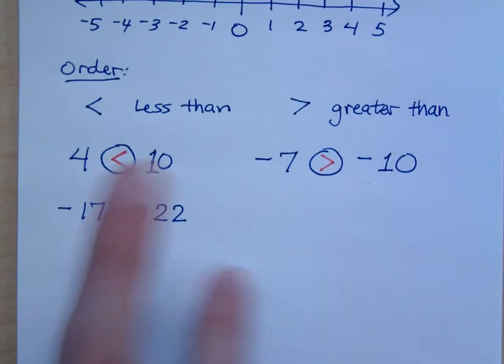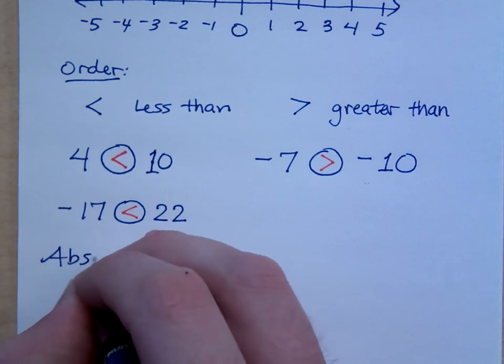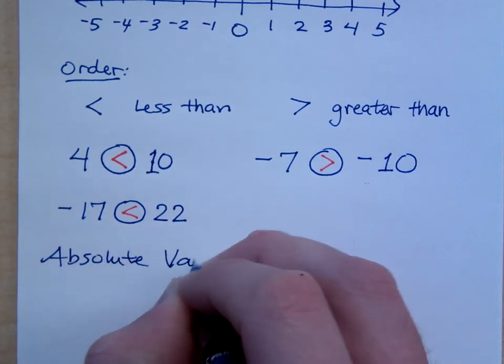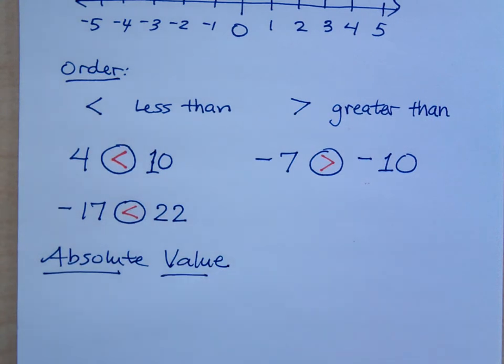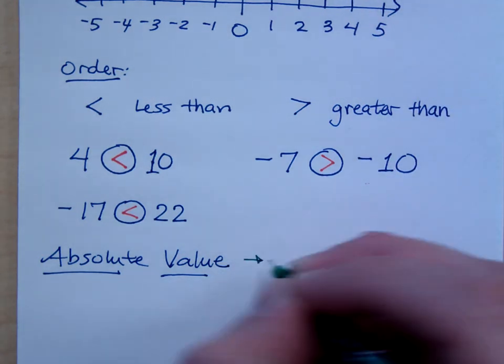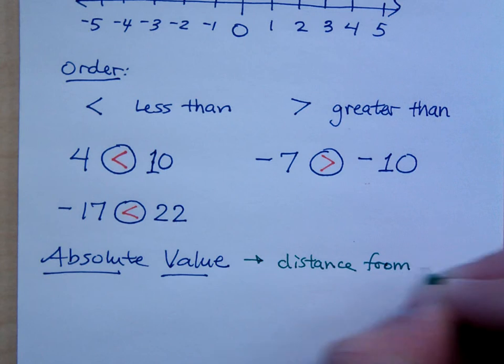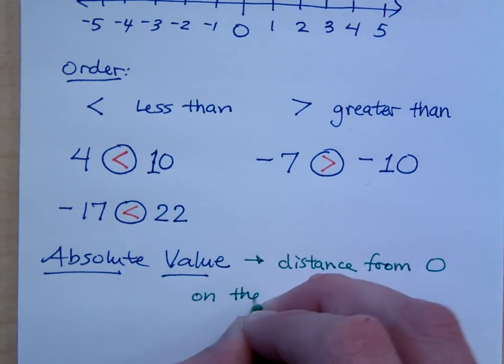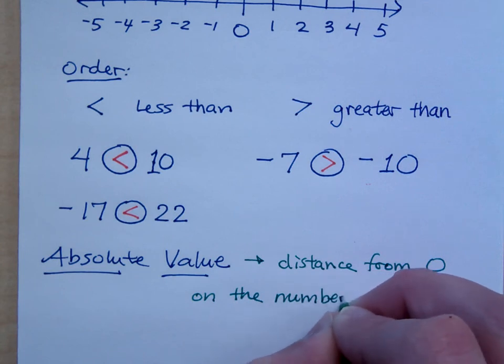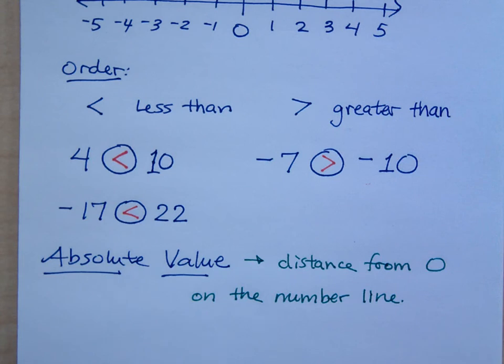Because we're going to use this idea of greater than and less than, along with the concept about absolute value. What is absolute value? Do you guys know? Good. That's why I'm here. Absolute value just means this. It is the distance from zero. Distance from zero on the number line.